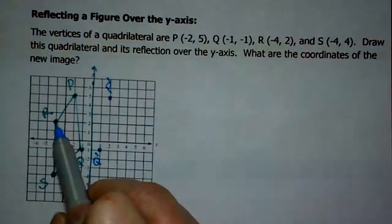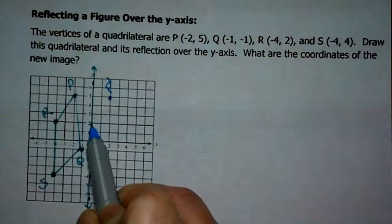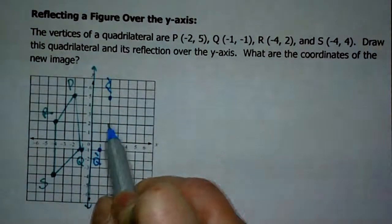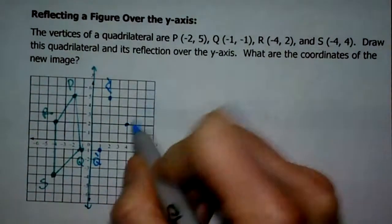Here's R. R is 1, 2, 3, 4 away from the line of reflection. So I'm going to go 1, 2, 3, 4 away from the line of reflection over here.